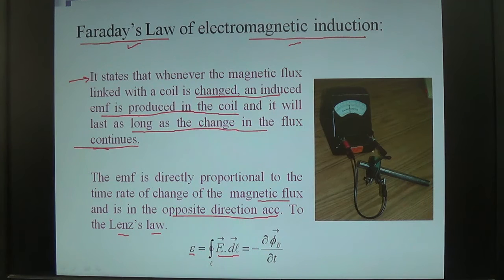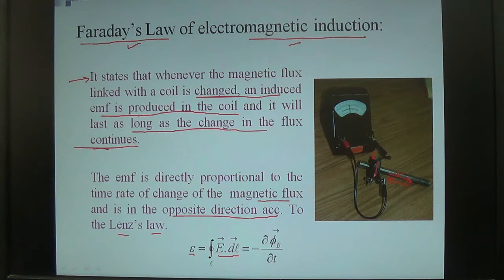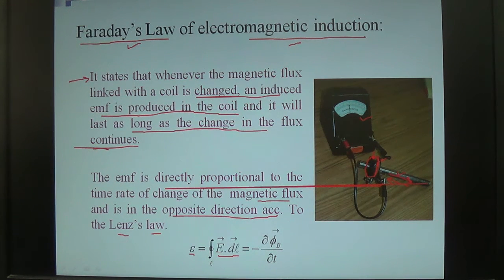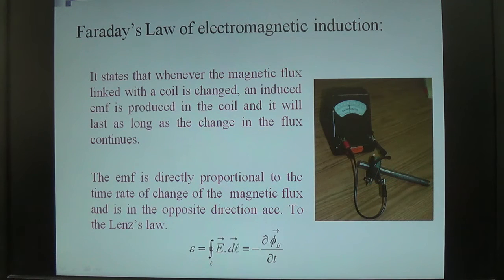Here you see a coil and a bar magnet. When the magnet moves in the forward and backward direction, it basically changes the flux associated with this coil. The two ends of this coil are connected with the galvanometer. So when the flux changes associated with this coil, the EMF produced inside it produces a deflection in the galvanometer. This is the basic idea of Faraday's law.